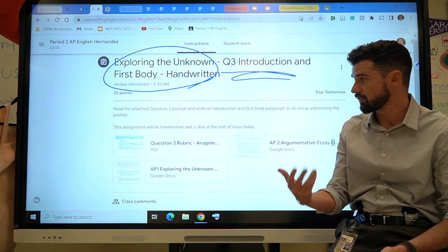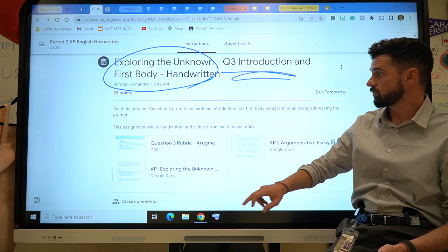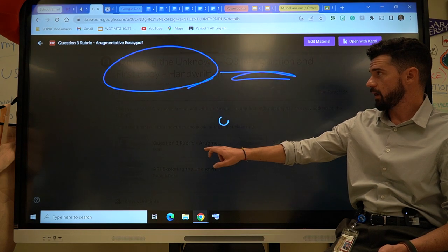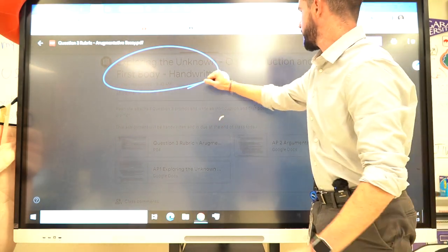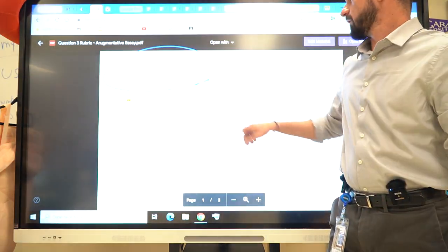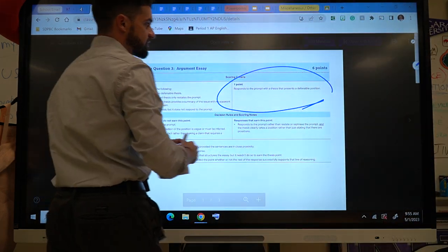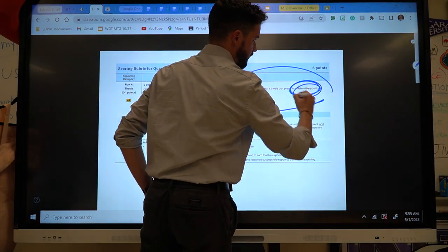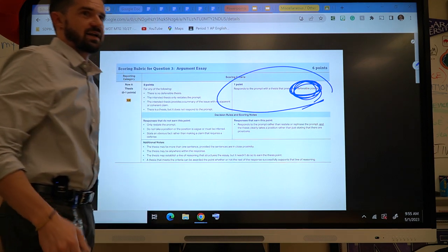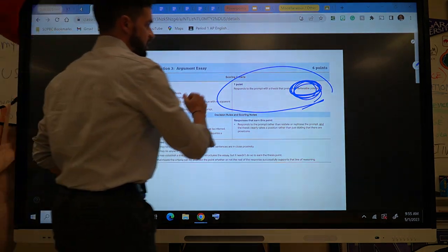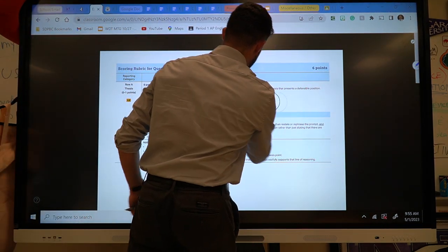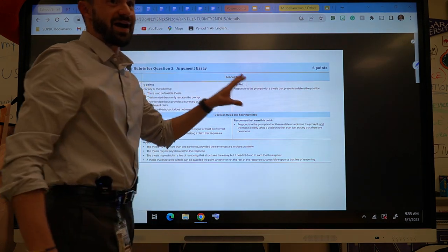And so I'm going to break down basically what you're doing. Now for the actual rubric, when you get to that, it's pretty clear in that rubric what you need to do. You need to respond to the prompts with the thesis, but it has to take an actual defensible position. And I'm going to go over that position, and you got to get a one point for it.